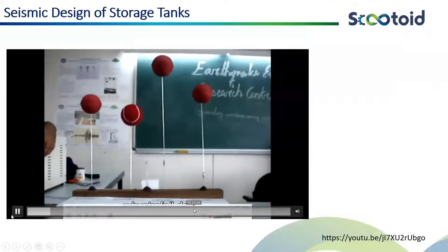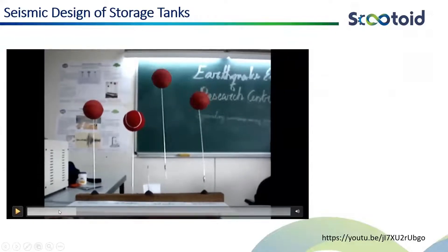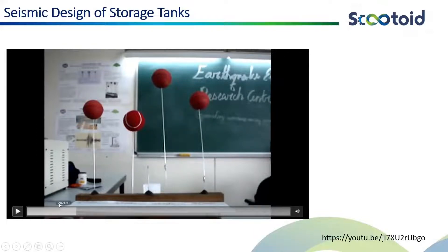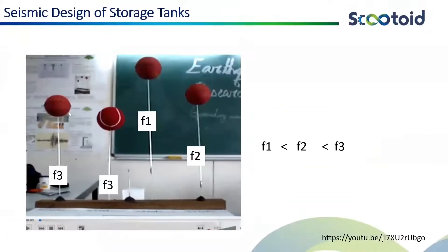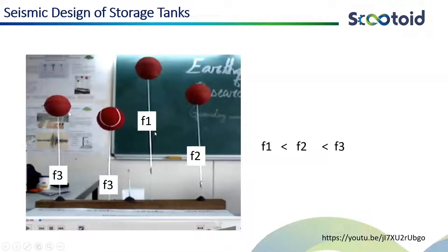So I'm moving this table — the table represents the earthquake motion — and slowly we are increasing the frequency of that acceleration. We have four equipment with different frequencies. The longest one has the lowest frequency, f1. The next one has frequency f2, which is more than f1. And these two equipment have the same frequency f3.